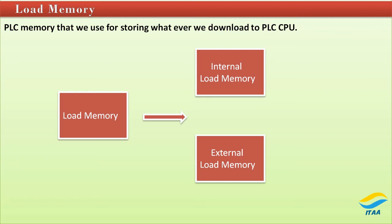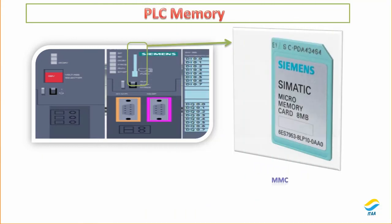In external load memory we use MMC cards — micro memory cards — which are specific Siemens PLC cards that we plug in. You can see this card here; it is just like a memory card we use in a mobile phone for additional storage. The purpose is the same — it acts as storage. Even in the case of power loss, data is retained in these MMC cards, so you will not lose data in external load memory.